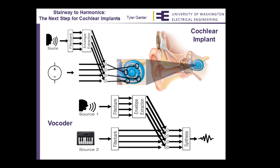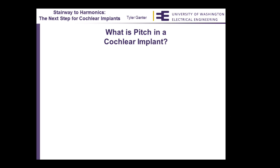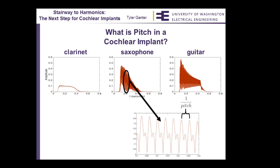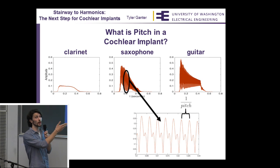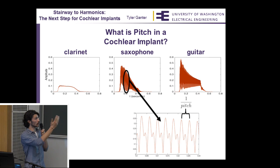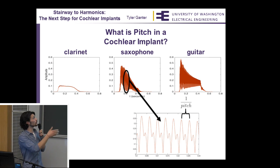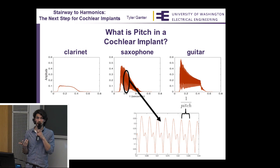Looping back to the cochlear implant: it breaks up the audio source and extracts envelopes, but rather than applying those to a second source, they control the amplitude of electrical stimuli inside the cochlea. So where does pitch come from? If we zoom in on the saxophone, there's a temporal modulation, and the period of this modulation is one over the pitch of the signal. For the saxophone and guitar, we get a pitch. For the clarinet, there's no pitch — because the clarinet only has odd harmonics.